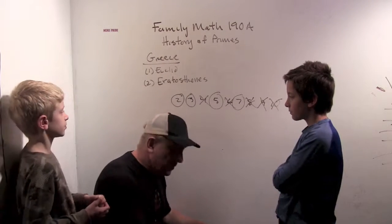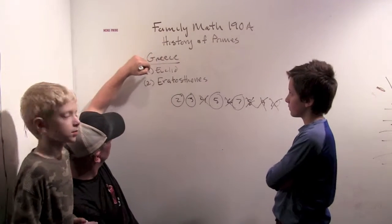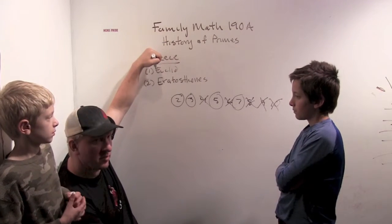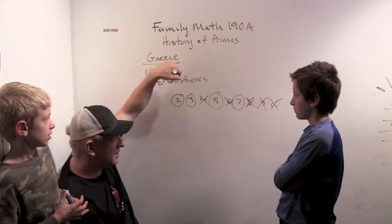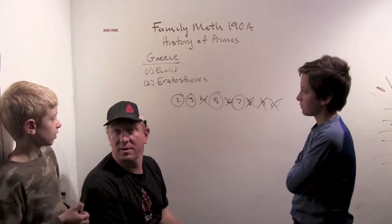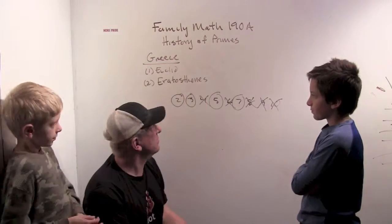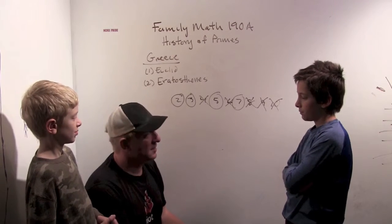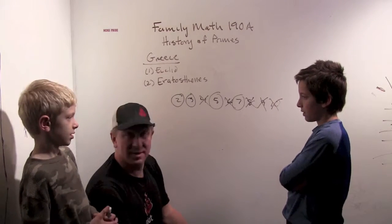So what's really neat about this is that in ancient Greece Euclid proved that there was an infinite number of primes, and Eratosthenes showed how to find all of them. So that's 2,500 years ago. They knew those two things. Pretty amazing, right?